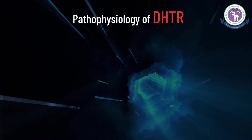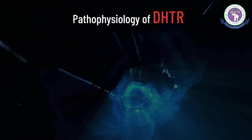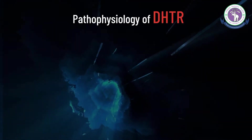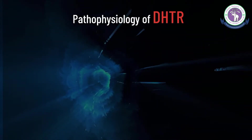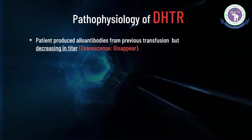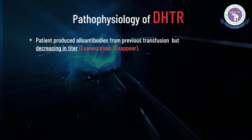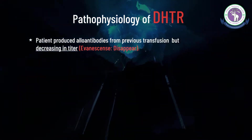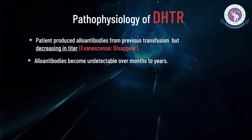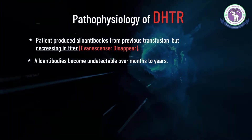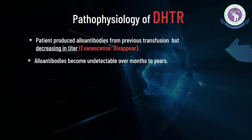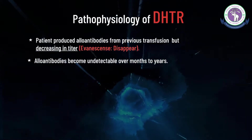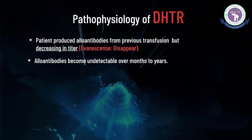DHTR rarely occurs as a result of primary immunization, but is generally associated with subsequent transfusions. Detection of alloantibodies in a patient's serum may fail because antibody titers may slowly decrease after the initial immune response — a phenomenon termed evanescence, or disappearance. Approximately 30 to 60% of alloantibodies become undetectable over months to years. The most notable antibody that often induces DHTR is antibody to the Kidd blood group antigen, known as the Kidd behavior.